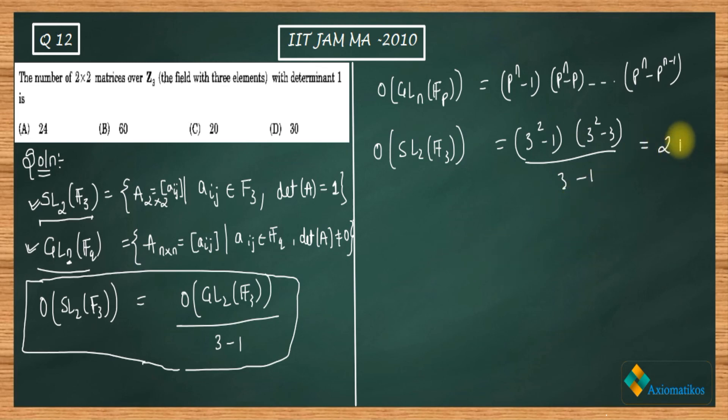If you calculate this number, you will end up with 24. So this was a very easy question, totally dependent upon the formula. You just need to remember the order for this group and order for this group.